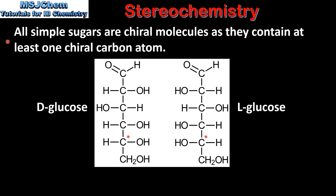All simple sugars are chiral molecules as they contain at least one chiral carbon atom. Here we have the structures of the two enantiomers of the monosaccharide glucose. On the left we have D-glucose and on the right we have L-glucose. The D and L stereoisomers refer to the configuration of the chiral carbon atom that's furthest away from the aldehyde or ketone group.